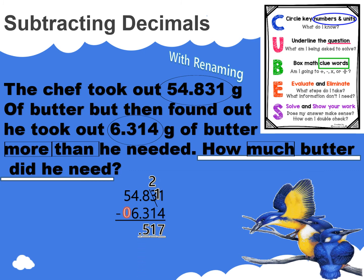Six ones from four ones cannot work. Go over to your tenths column and rename five tenths as four tenths. Go back to your ones column — you now have fourteen ones. Six ones from fourteen ones leaves eight ones. Bring down your four tenths. How much butter did he need? He needed 48 and 517 thousandths.